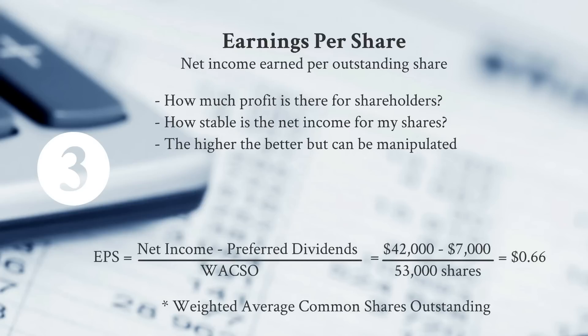In the calculation, we take net income — accounting income, not economic value or cash flow — minus preferred dividends, and divide by the weighted average common shares outstanding. In this case, we get 66 cents per share, which is strong or weak depending on the share price.